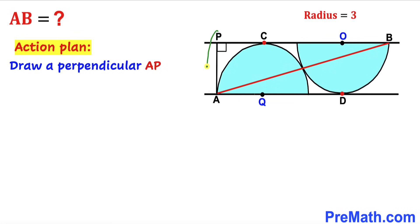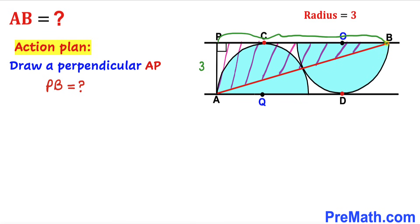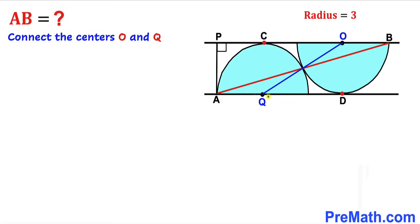If we draw this perpendicular AP, then as a result we are going to get this right triangle APB. We know that AP is the same as the radius of the semicircle, which is three units, so this side is three units. Therefore we are going to calculate side length PB in order to calculate side length AB. So our task is to calculate side length PB now.